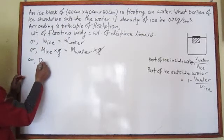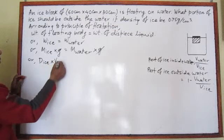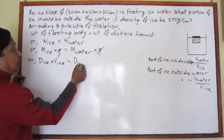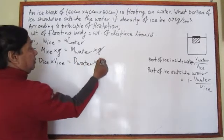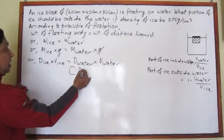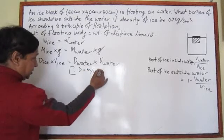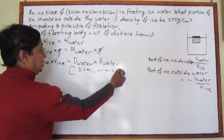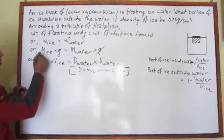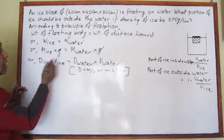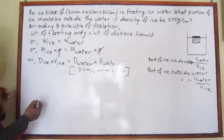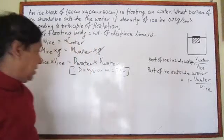We can write: density of ice times volume of ice equals density of water times volume of displaced water. This substitution is valid because density equals mass divided by volume, which means mass equals density times volume. So mass of ice becomes density of ice times volume of ice, and similarly for water.